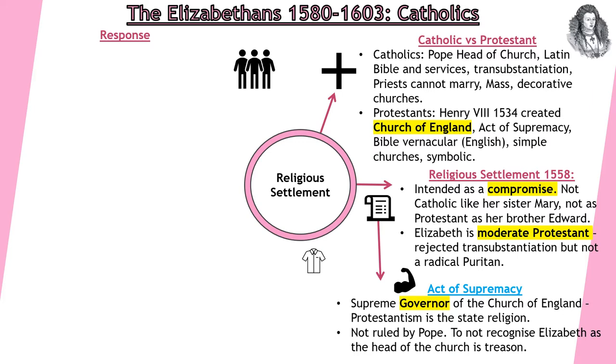She's reinforcing the fact that Protestantism is going to be the true and official state religion, but she's also trying to pacify Catholics by not rejecting the authority of Christ. However, what is really clear is she's stating it's not going to be ruled by the Pope. That means to not recognise Elizabeth as head of the church will be considered treason.